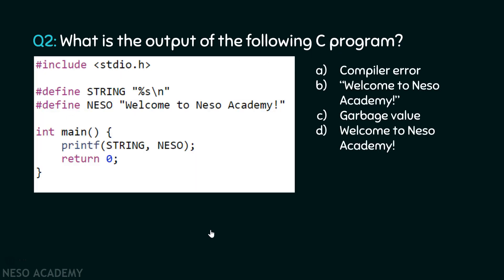What is the output of the following C program? This is the C program available over here. What would be its output? Is it a compiler error? Is it 'Welcome to Neso Academy!' with exclamation mark and double quotes? Is it a garbage value? Or is it 'Welcome to Neso Academy!' with exclamation mark? Try to understand this code on your own — pause the video for a while. Here you can see these are two macros with their corresponding values which are strings: one is "%s\n" within double quotes, and the other is 'Welcome to Neso Academy!' within double quotes.